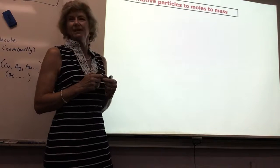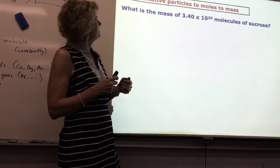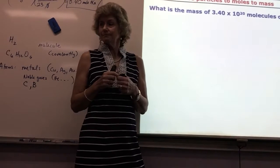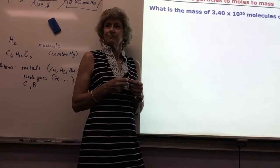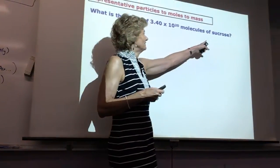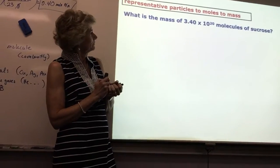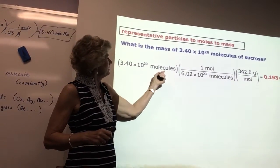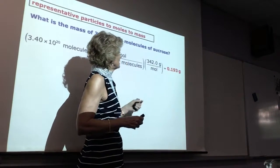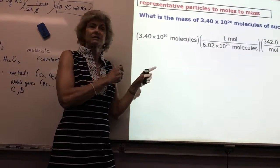How about representative particles to moles to mass? This is just a teach thing. This is not like a real life thing. We never have that many molecules. We have no way to count that. So we need the mass of 3.40 times 10 to the 20 molecules of sucrose. So what I gave you, molecules, molecules per mole, Avogadro's number. Don't forget to set it up correctly. We divide by the number of molecules. And then the molar mass, 342 grams per mole, 0.193. There's three sig figs, three sig figs. This was kind of fake. It was just for practice.